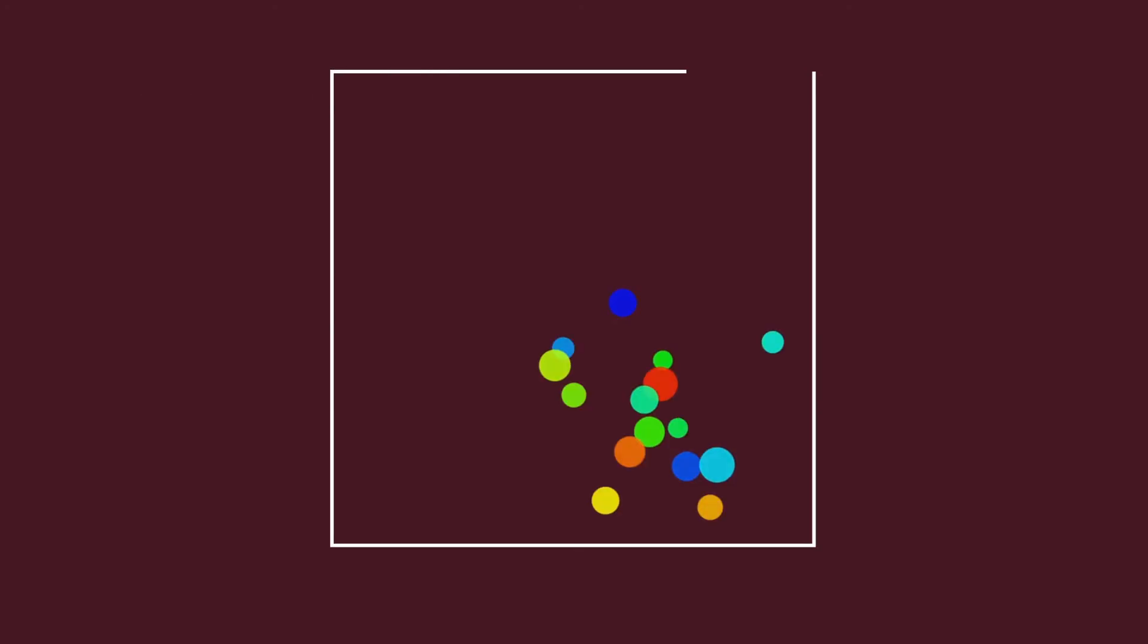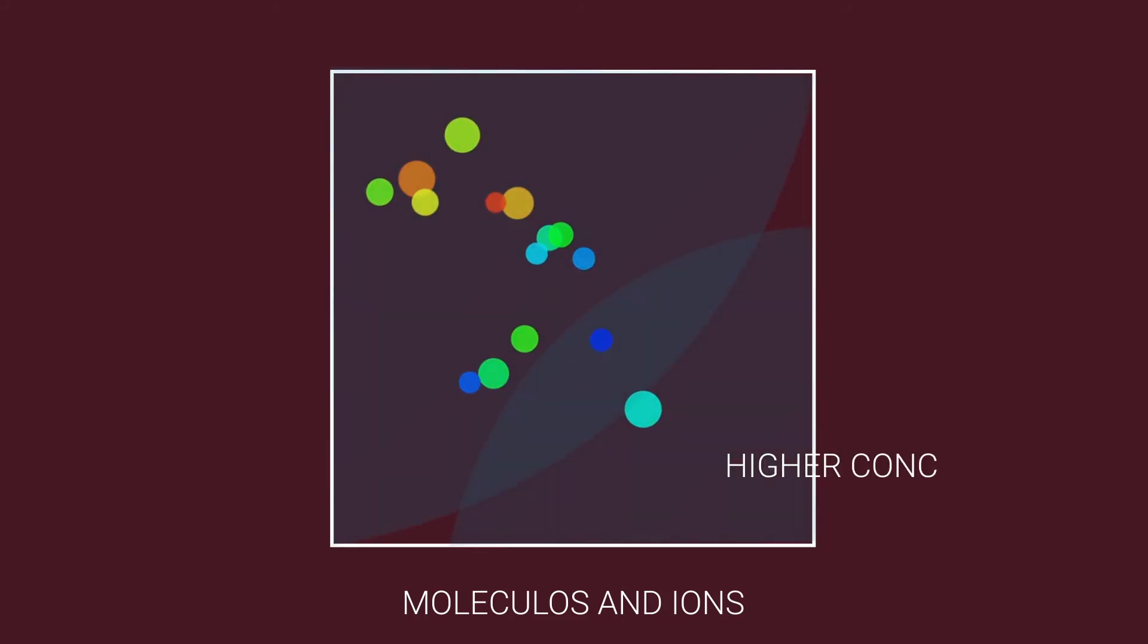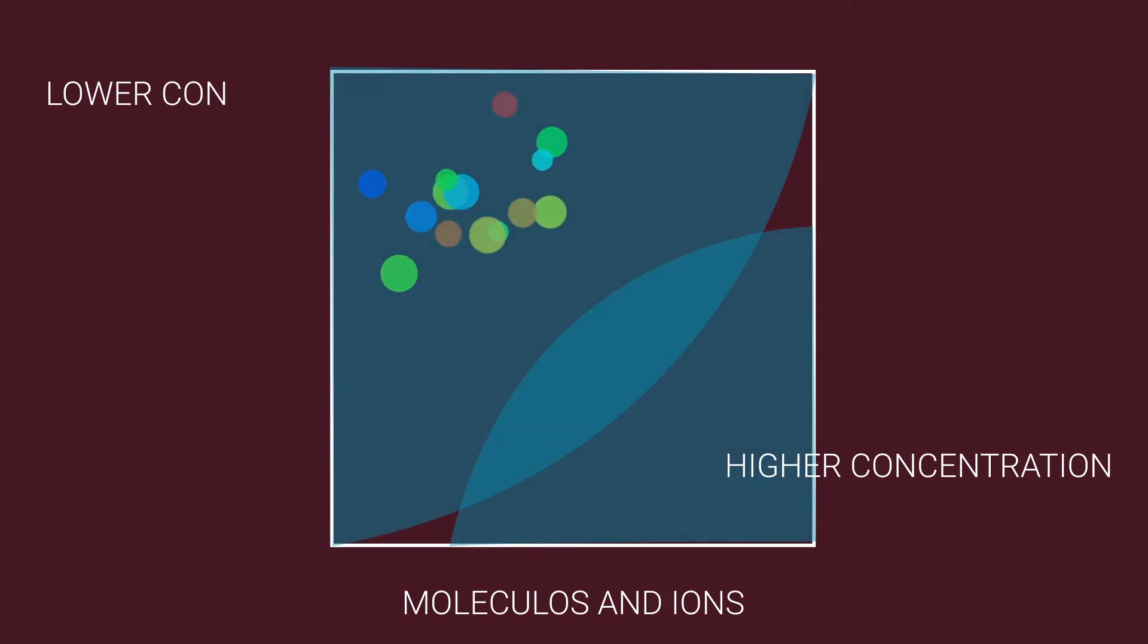Molecules and ions are in constant random motion and tend to distribute themselves evenly in the space available to them. They move from a region of higher concentration to a region of lower concentration by simple diffusion along a diffusion gradient.